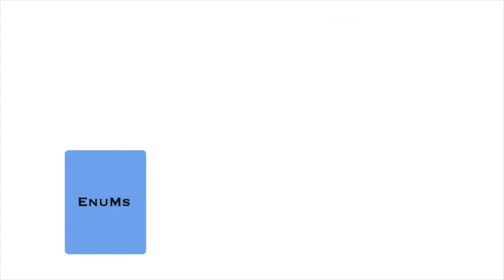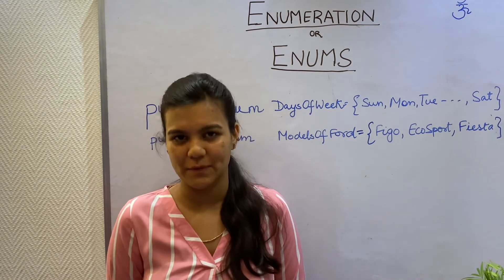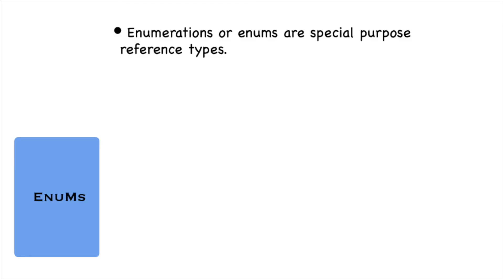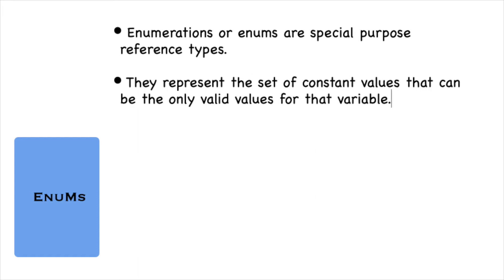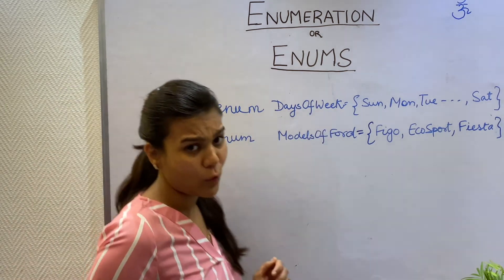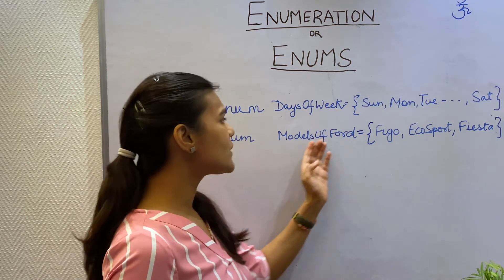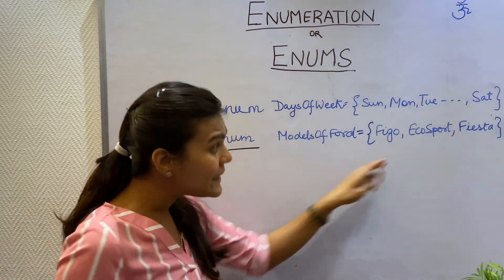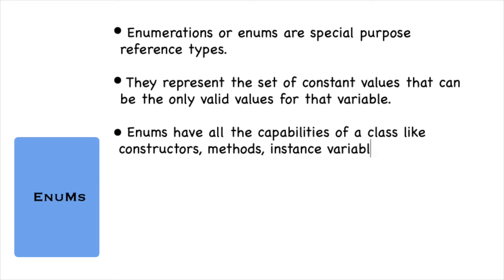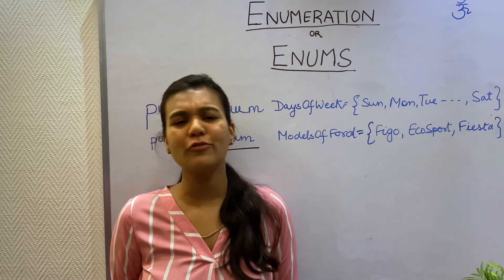The third keyword is enumeration — I'll be addressing it as enums throughout my explanation. Enums are special purpose reference types that represent the set of constant values that can be the only valid values for a variable. For example, I have my days of week defined as an enum, so it can hold only Sunday, Monday, Tuesday up to Saturday as its valid values. Similarly, I have models of a car defined as an enum, and these can be the only valid models. Enum defines a class type, so it gets all the capabilities of a class — like constructors, methods, and instance variables — though these are not very commonly used.